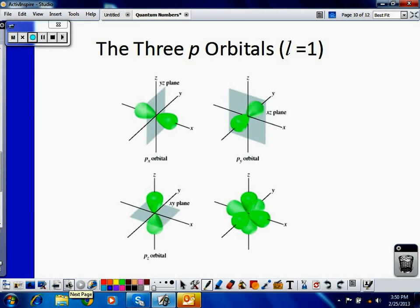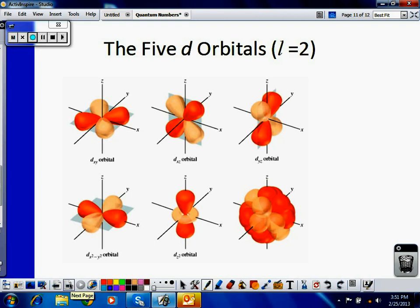Okay. When l equals 1, we get p orbitals, so each one of these, this is a picture of them all together, would correspond, maybe this is negative 1, zero, positive 1. So each M sub l value corresponds to one of these three p orbitals. Then we get to D, when l equals 2, we have D orbitals, so M sub l could be negative 2, negative 1, zero, positive 1, positive 2. So when we put them all together, we start building something that roughly represents a sphere, and that's kind of where we get atomic radius from.